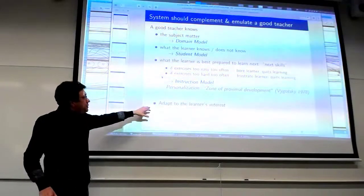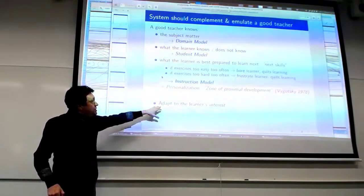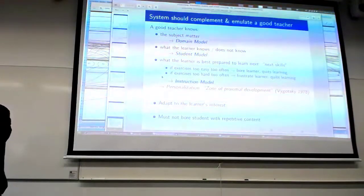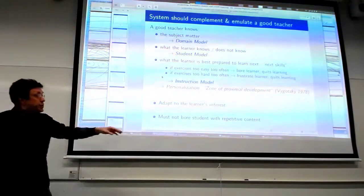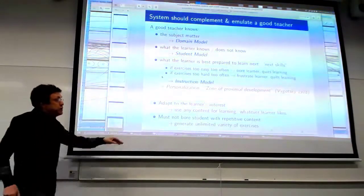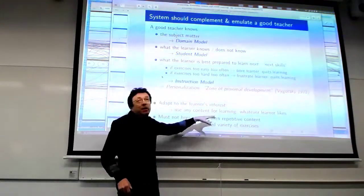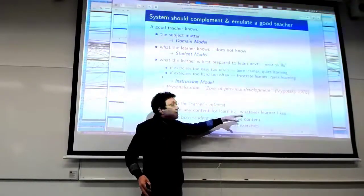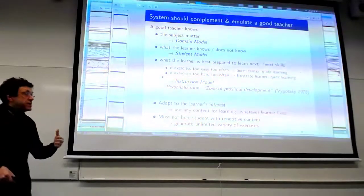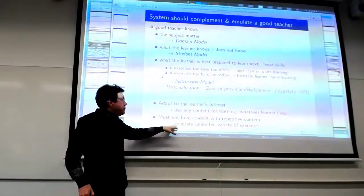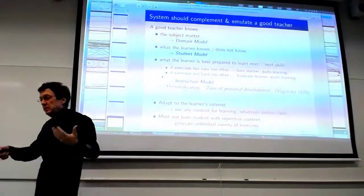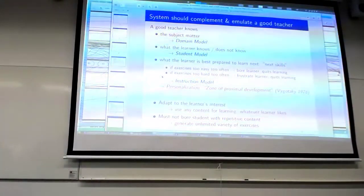Other goals, aside from these key goals, is we want to adapt to the learner's interest — we don't want to bore the learner with uninteresting or repetitive content. What we try to do is allow the learner to use any content she wants for learning, whether you're interested in politics, horses, football, or whatever. And we want to generate an unlimited variety of exercises so that they don't repeat and we get away from the textbook.